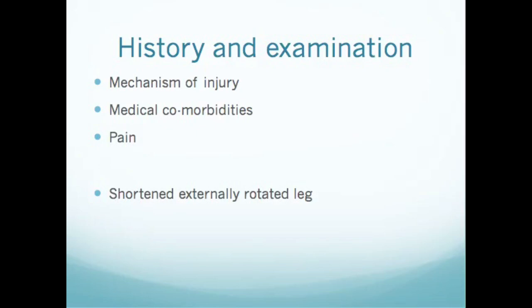On examination, consider the neurovascular status and whether it's an open or closed injury. Specifically for neck of femur fractures, the typical finding is a shortened and externally rotated leg. This is the classic finding with a displaced neck of femur fracture, though it may not always be present. In a completely undisplaced fracture, you may or may not see this sign.